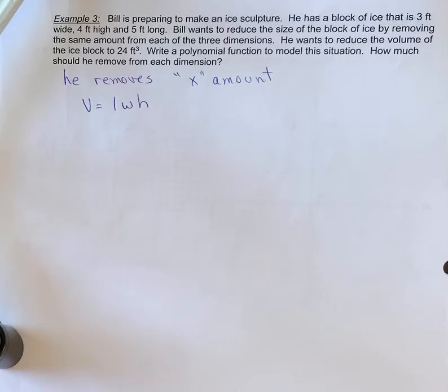Bill wants to reduce the size of the block of ice by removing the same amount from each of the three dimensions. He wants to reduce the volume of the ice block to 24 feet cubed.